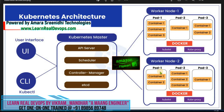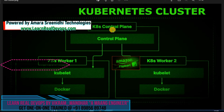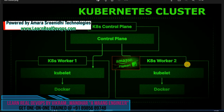Now with this clarity, let us proceed forward. But before that, we also need to justify why we need to set up a Kubernetes cluster consisting of one master with two worker nodes — one master with worker node 1 and worker node 2, so two worker nodes with one master.